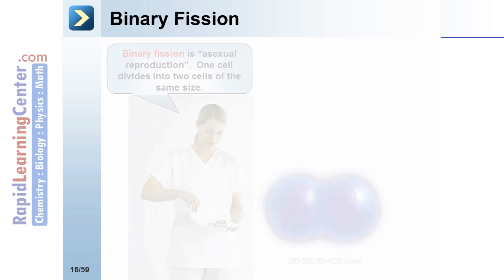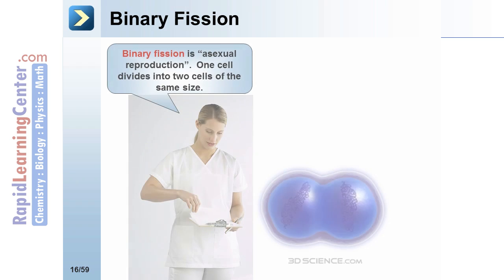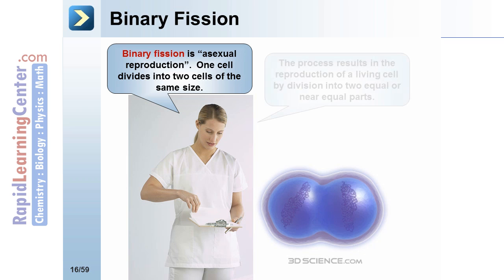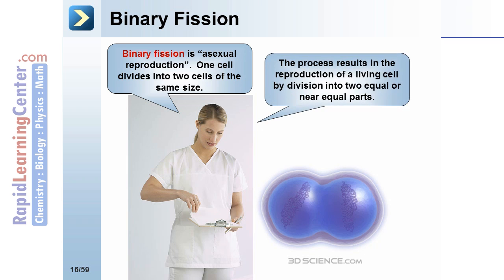Binary fission. Binary fission is asexual reproduction. One cell divides into two cells of the same size. The process results in the reproduction of a living cell by division into two equal or near-equal parts.